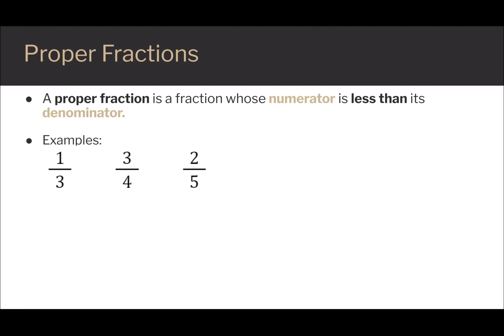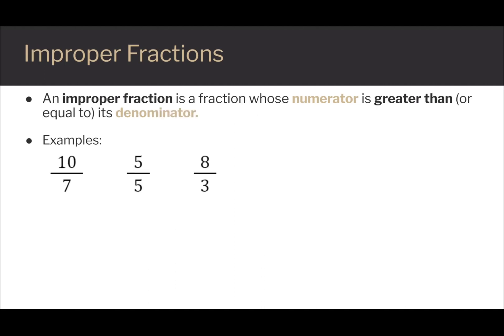The top numbers or the numerators are always smaller than the denominators or the bottom numbers. An improper fraction is a fraction whose numerator is greater than or equal to its denominator. For example, ten sevenths, five fifths, eight thirds. All of the numerators are greater than or equal to their denominators.